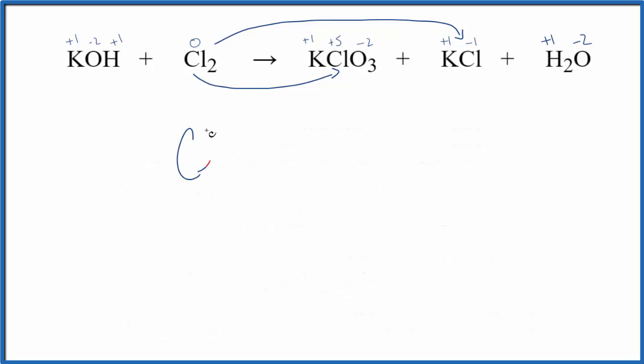So we have Cl₂, and that's going to this KClO₃. And here we go from 0 to plus 5, so this number's increased. This is the oxidation reaction. We also have Cl₂ going to KCl. Here we go from 0 to negative 1. Because of that, this is a smaller number here, this is the reduction half reaction.